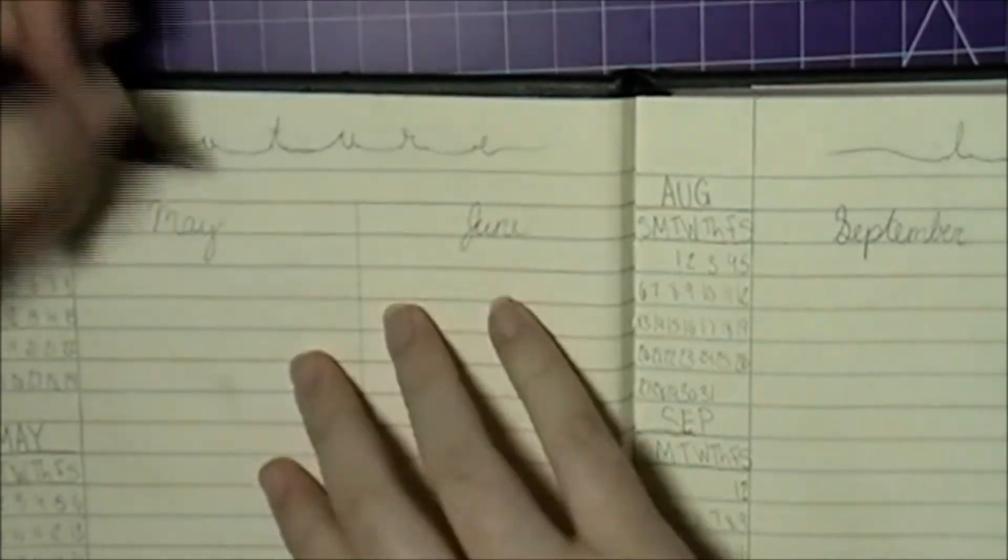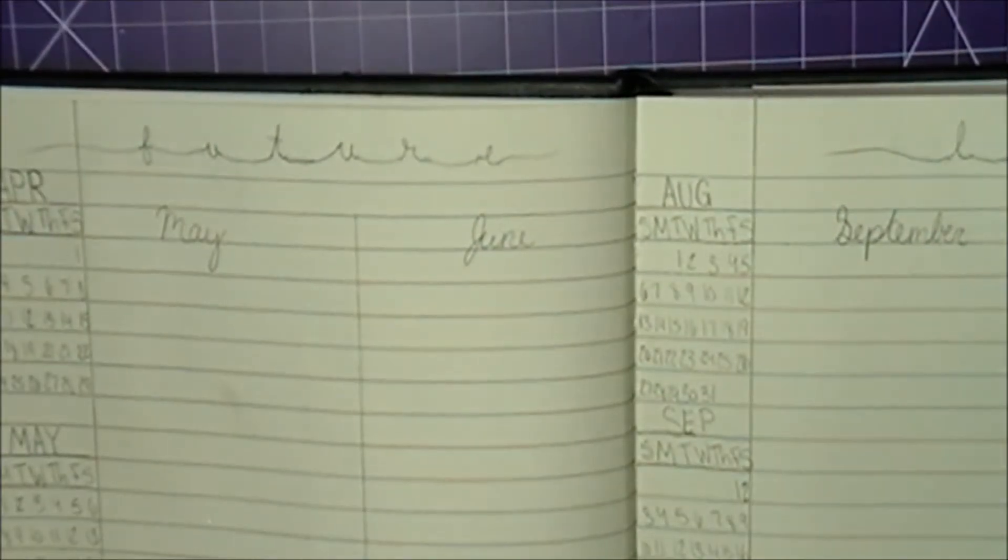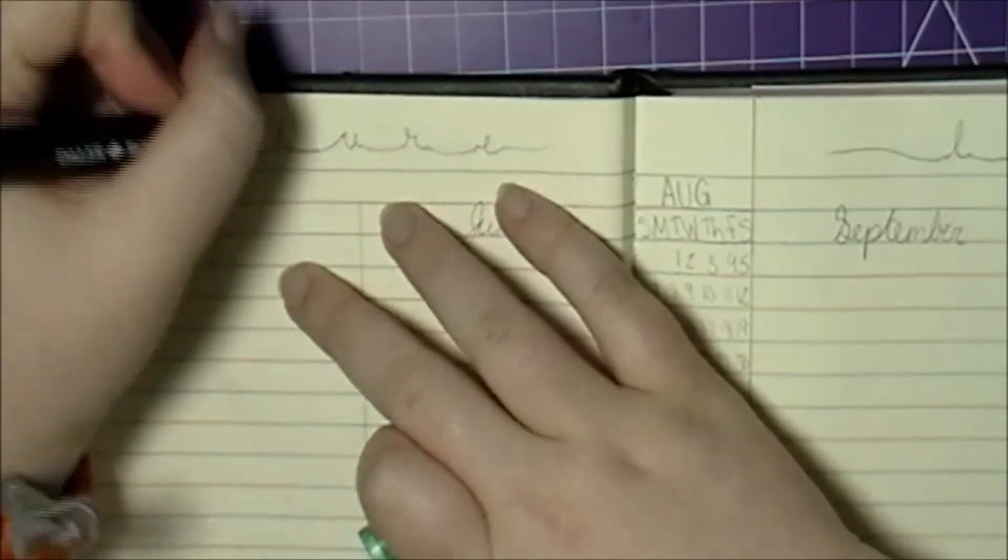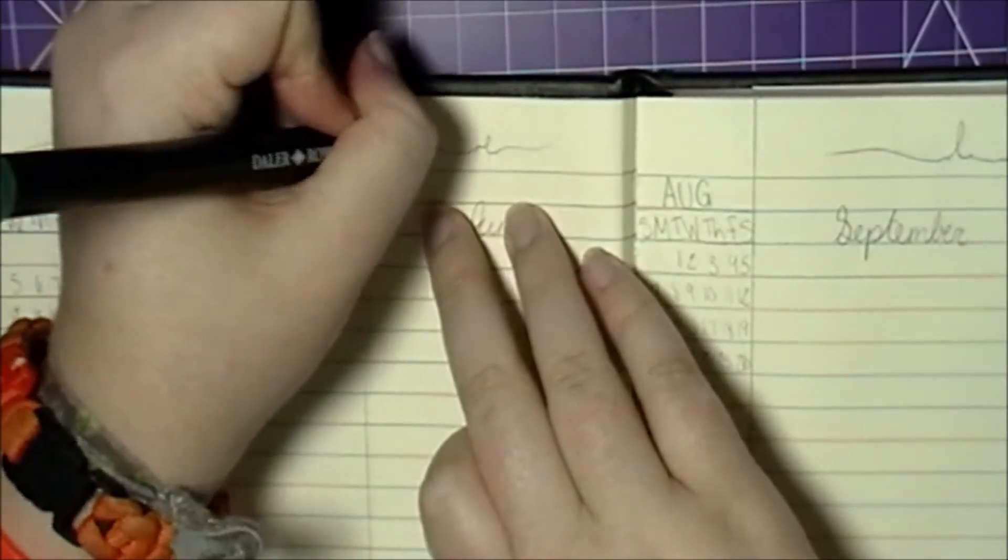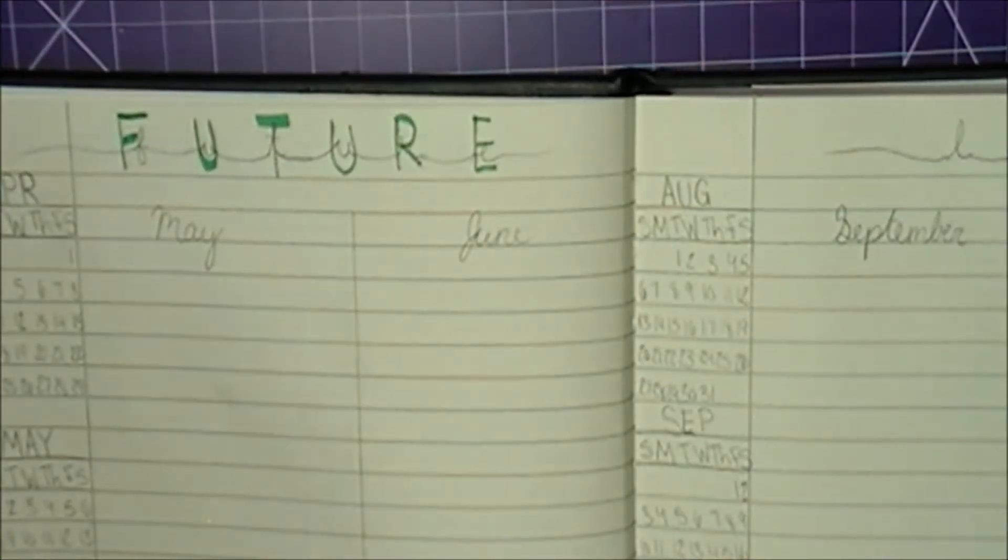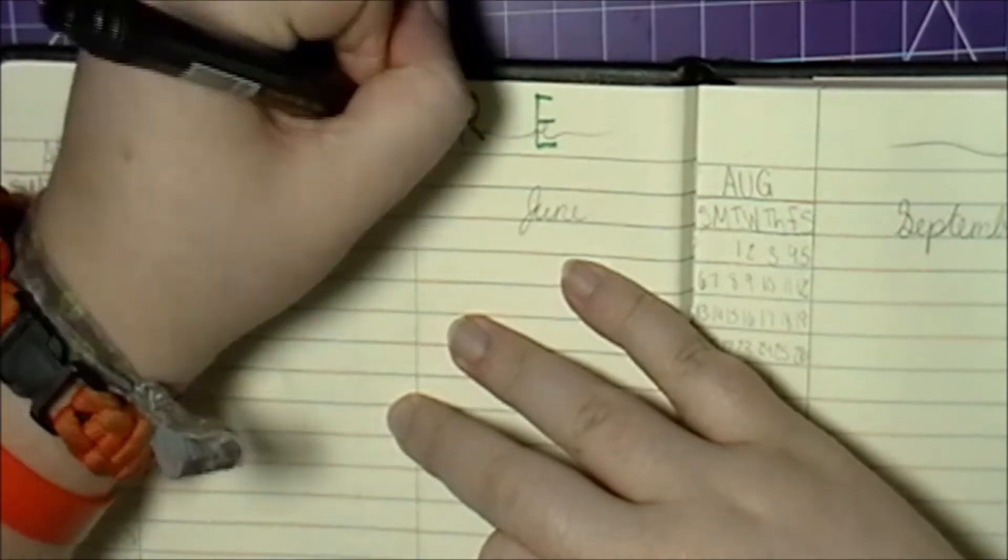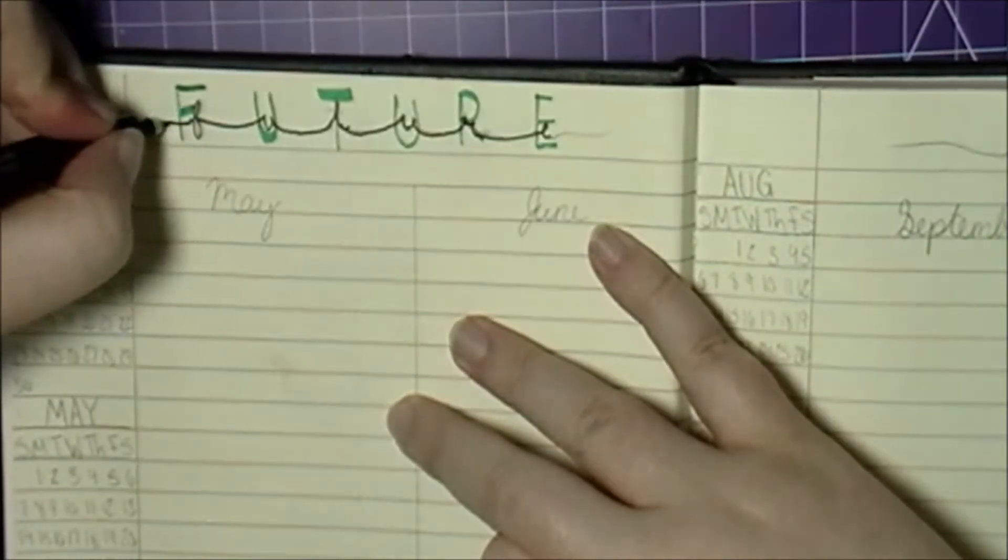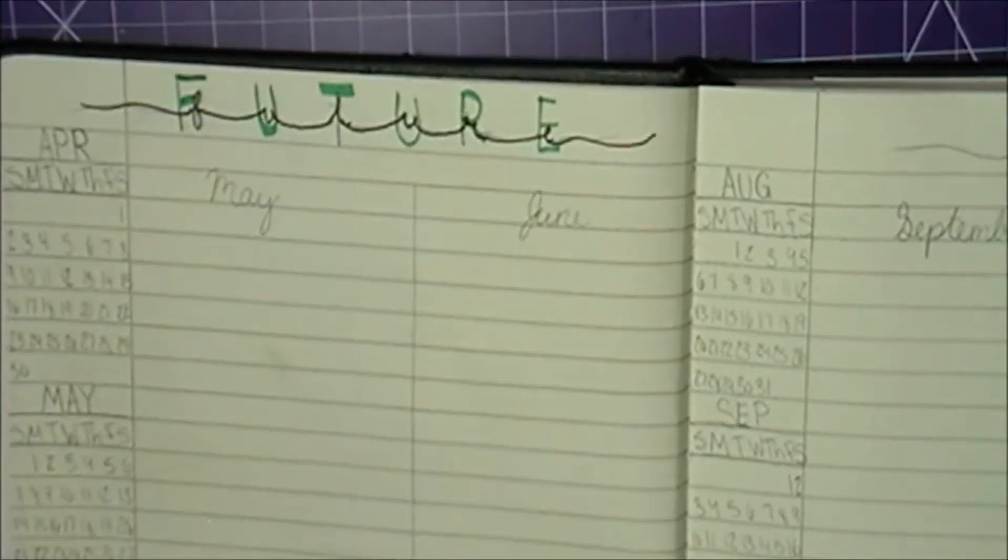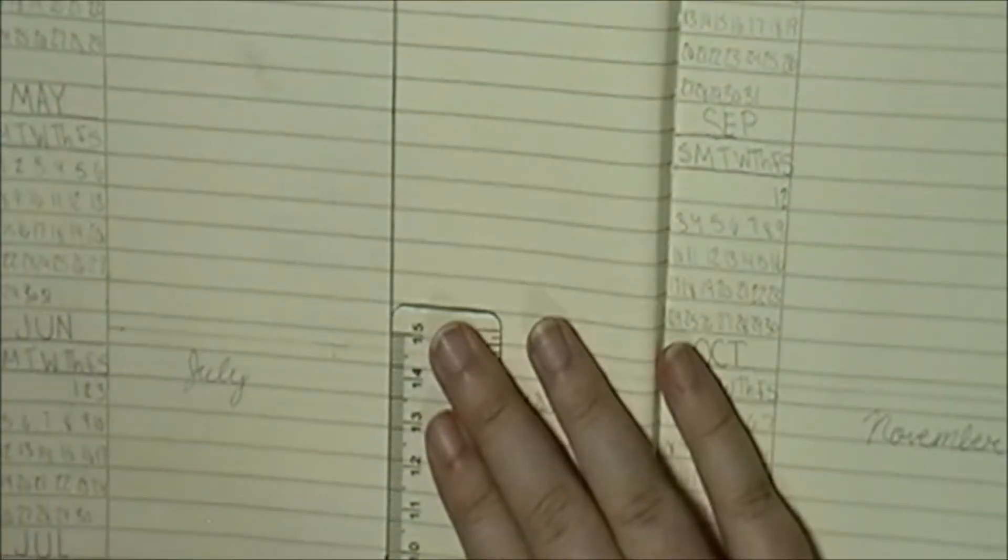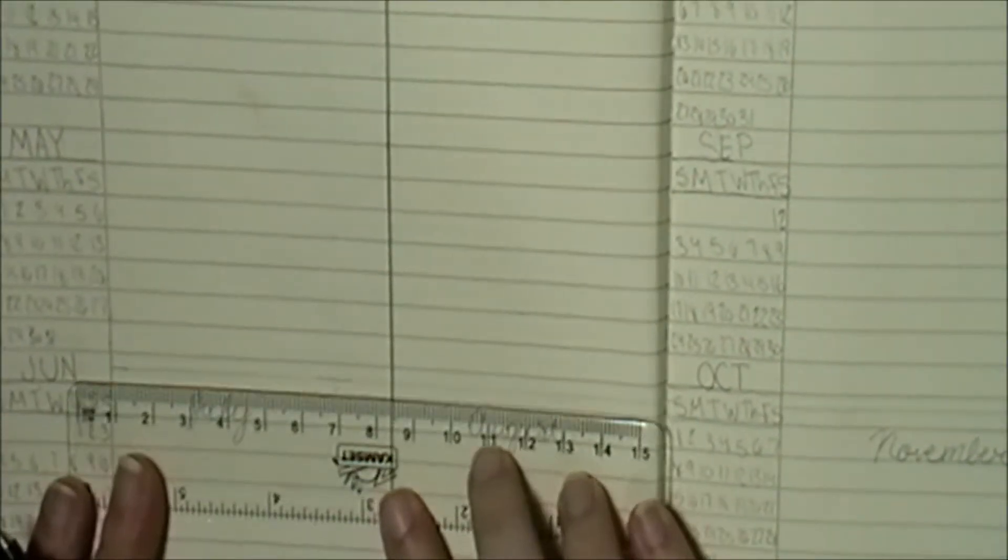Now this next page I'm doing is a future log, and I started with May because we're already into this year, so I didn't want to do a future log starting in January because those months have passed. And it's just a little simple four months on a spread.